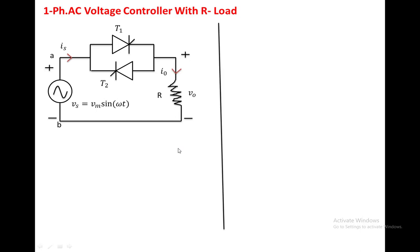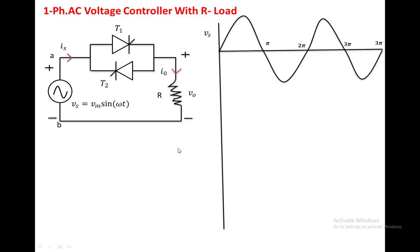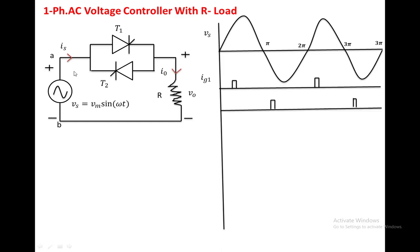To explain the circuit operation, we have taken two cycles of the input voltage. During the positive cycle of the input voltage, A is positive and B is negative. With this polarity, T1 is forward biased whereas T2 is reverse biased. So we apply the triggering voltage to T1 with a delay angle alpha. During the negative cycle of the input voltage, T2 is forward biased whereas T1 is reverse biased, and we apply the triggering voltage to T2 with a delay angle alpha.